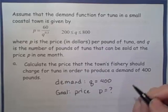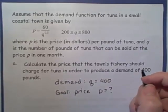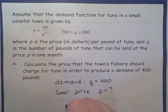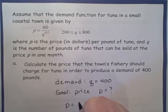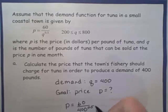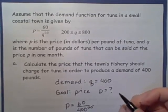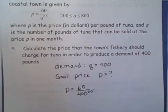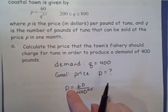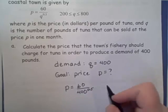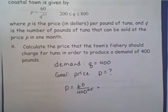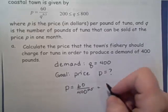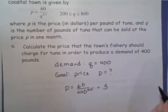Well, all we need to do is plug it in. So we have 60 over 400 to an exponent of 0.5. We have P equals 60 over 400 to the 0.5, and I would just plug that into my calculator, and I get 3.